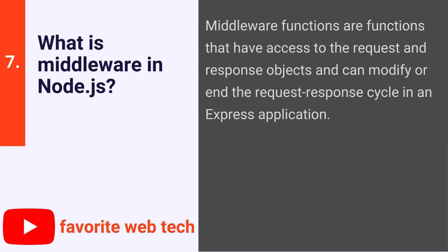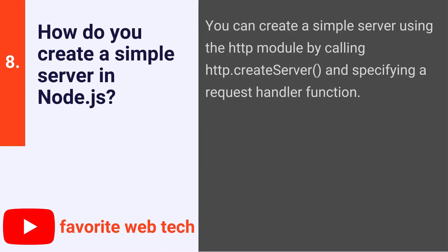What is middleware in Node.js? Middleware functions are functions that have access to the request and response objects and can modify or end the request-response cycle in an Express application. How do you create a simple server in Node.js? You can create a simple server using the HTTP module by calling http.createServer and specifying a request handler function.